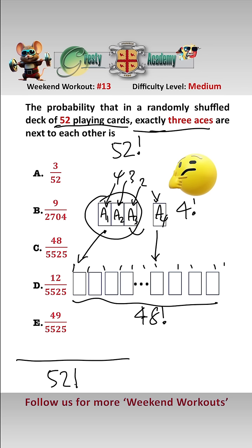Adding all of this up, the probability is over 52 factorial, we have 4 factorial which is the ways of arranging the aces, times 48 factorial which is how to arrange the other 48 cards, times 49 which is the number of ways we can put the three aces in the gap and times 48 which is the way we can put the other ace in the gap.